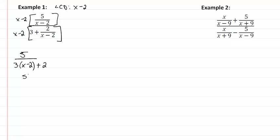So we now have 5 over 3x minus 6 plus 2. That gives us 5 over 3x minus 4, and that will be our answer.